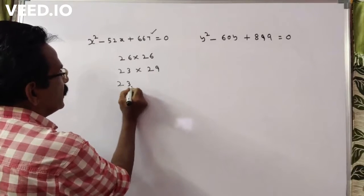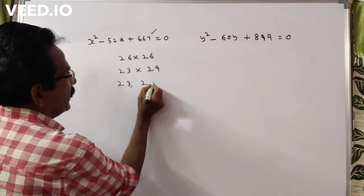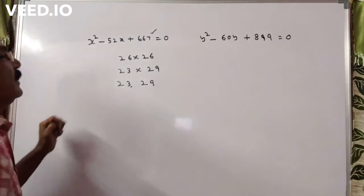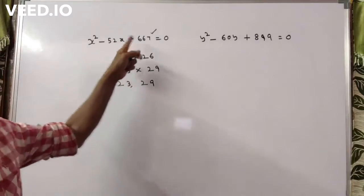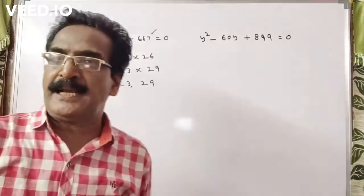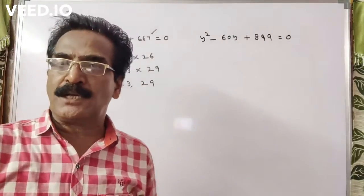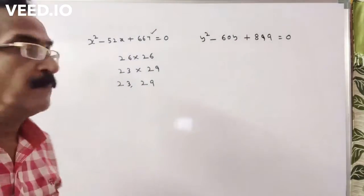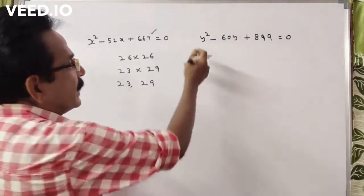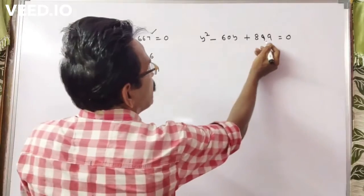So the x values are 23 and 29. Here B is negative and C is positive, so both roots are positive.